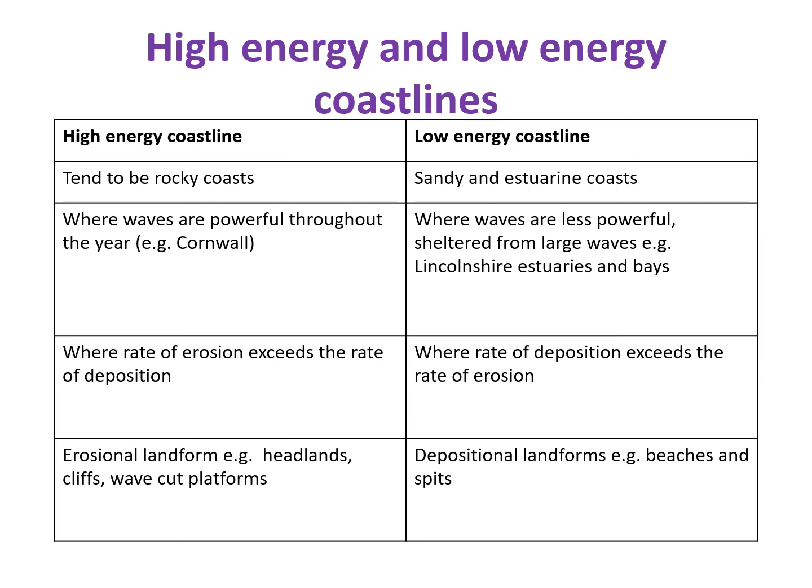A low energy coastline tends to be sandy and estuarine coasts where waves are less powerful and there is shelter from large waves. Lincolnshire in the east of England is a good example — its estuaries and bays form a sheltered landscape where wave energy cannot fully impact the coast. Here, rates of deposition exceed the rate of erosion, and we see depositional landforms such as beaches and spits.